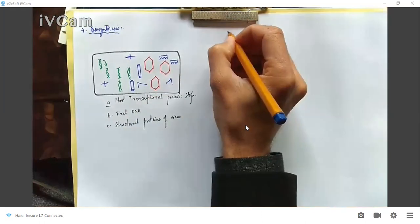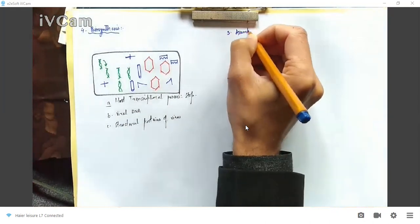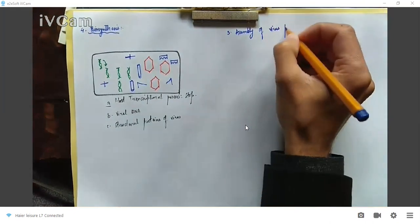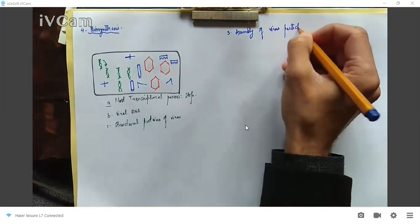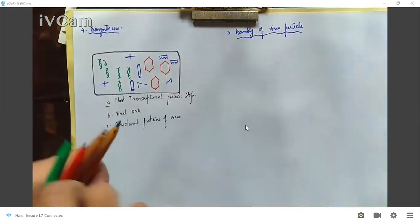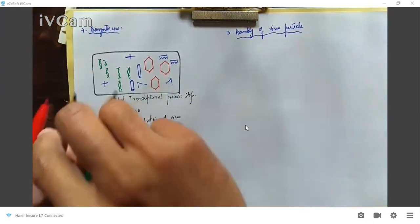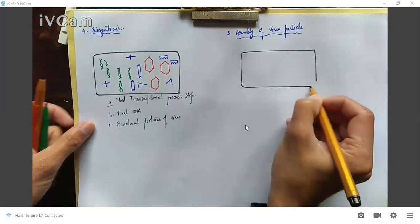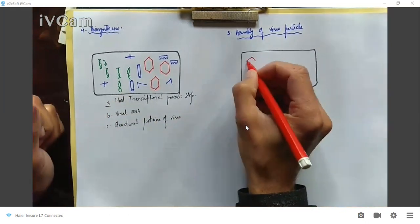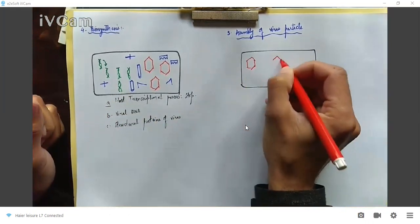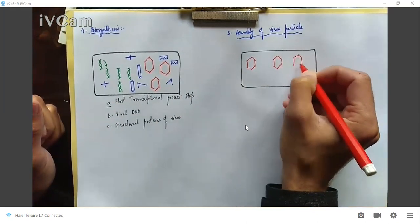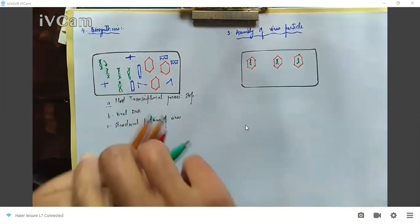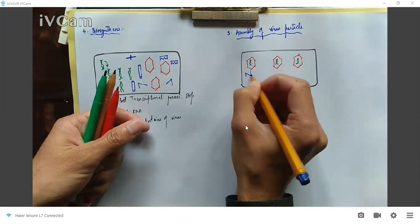The next step is assembly of the virus particles. The newly synthesized viral DNA and structural proteins are assembled together into new reformed phages inside the bacterial cell. These particles are assembled together to form new phage particles.